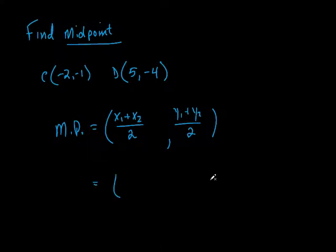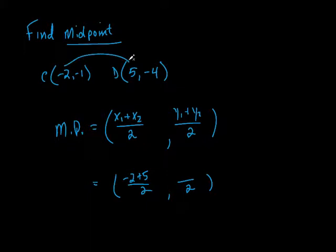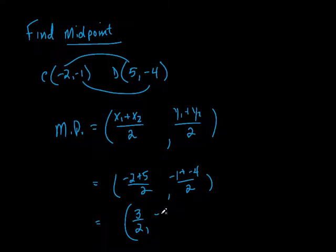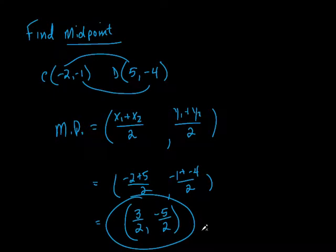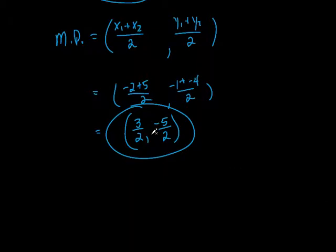Let's do it. I'll put over 2 right off the bat. For the x's I add them — not subtract — so it's negative 2 plus 5. For the y's: it's negative 1 plus negative 4. So we get 3 over 2 for the x, and negative 1 plus negative 4 is negative 5 over 2. That's perfectly fine as an answer — leave it like that. Don't waste time converting to a mixed number or decimals. That's how I'd rather you keep it.